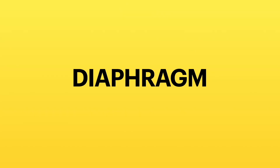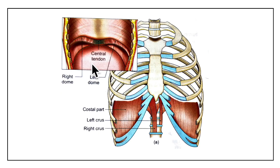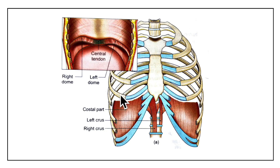Hello friends and welcome to my channel. In this video we will be learning about the anatomy of the diaphragm. The diaphragm is a dome-shaped muscle forming the partition between the thoracic and abdominal cavities, as you can see in this diagram. It is the chief muscle of respiration.